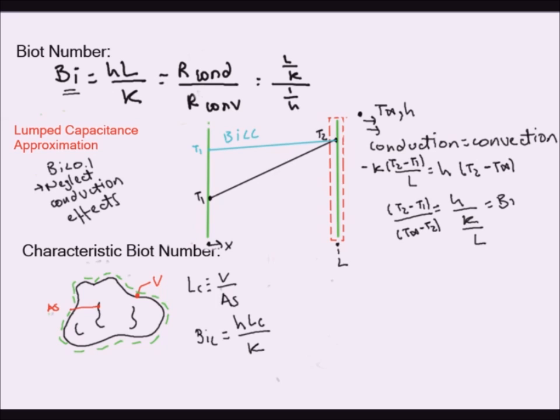Another remark is that you must not confuse this quantity with the Nusselt number. So the Nusselt number basically has the same form, but it applies to fluids only. In this case, the Biot number is only for solids. So it's not equal, Biot number not equal to Nusselt number. This one is fluids. This one is solids.